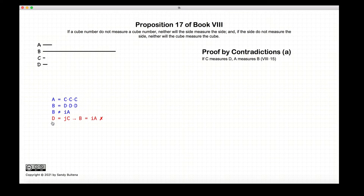But according to Proposition 15, if C measures D then A measures B. But we've already stated that A does not measure B, so there is our contradiction. Thus our initial statement is false and D is not measured by C.